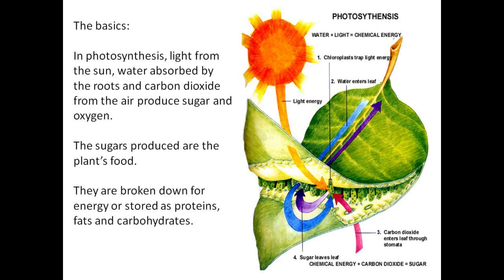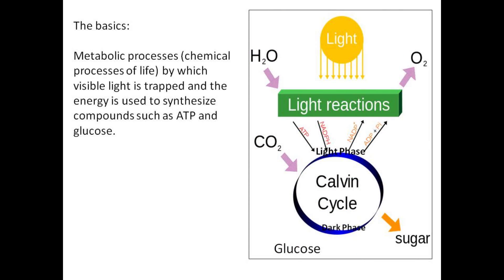The sugars are broken down for energy or stored as proteins, fats, and carbohydrates. Photosynthesis consists of metabolic processes by which visible light is trapped and the energy is used to synthesize compounds such as ATP and glucose.